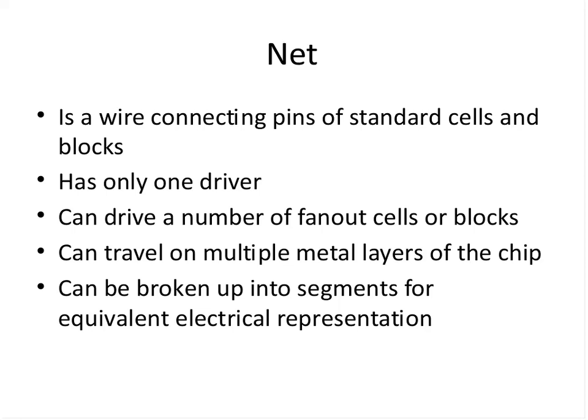A net can drive a number of fan-out cells or blocks. There is always one driver, but the number of receivers can be many. In that case the net will be segmented. For example, a buffer driving four other buffers will have one net from the output of the driver buffer, segmented to drive the different fan-outs. Physically this segmentation depends on routing and timing constraints, though logically it remains one net from driver to all receivers.